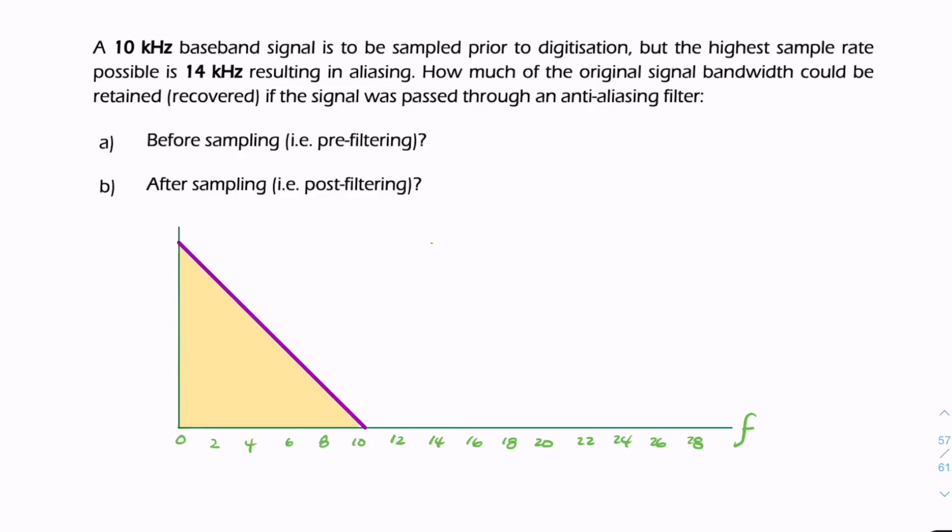This question is about anti-aliasing. We're given a message signal of 10 kilohertz bandwidth—not a single component, but a spectrum with 10 kHz bandwidth. I've sketched a signal here. We're talking about anti-aliasing because